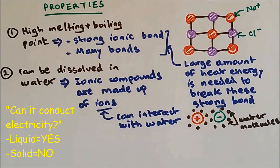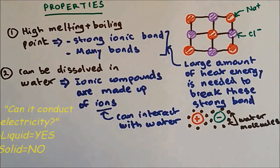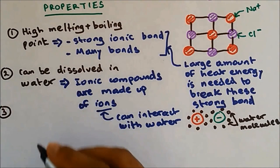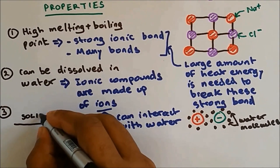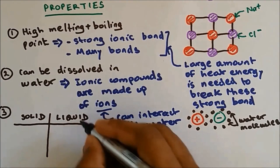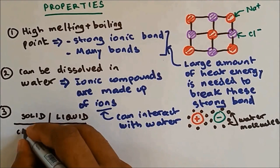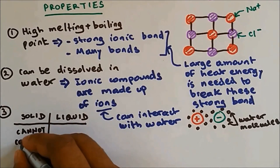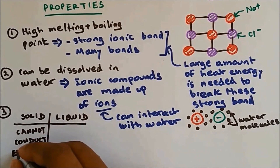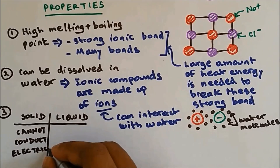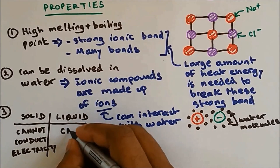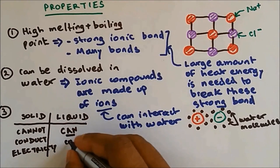The last property: giant ionic structure can only conduct electricity when it is found as a liquid. When it is a solid, it cannot conduct electricity.